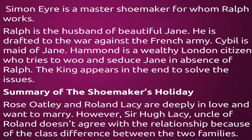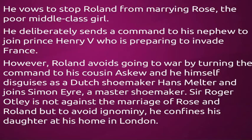Summary of The Shoemaker's Holiday: Rose Oatley and Roland Lacey are deeply in love and want to marry. However, Sir Hugh Lacey, uncle of Roland, doesn't agree with their relationship because of the class difference between the two families. He vows to stop Roland from marrying Rose, the poor middle-class girl. He deliberately sends a command to his nephew to join Prince Henry V who is preparing to invade France. Roland avoids going to war by turning the command over to his cousin Eskew, and he himself disguises as a Dutch shoemaker Hans Melter and joins Simon Eyre, a master shoemaker. Sir Roger Oatley is not against the marriage of Rose and Roland, but to avoid ignominy he confines his daughter at his home in London.